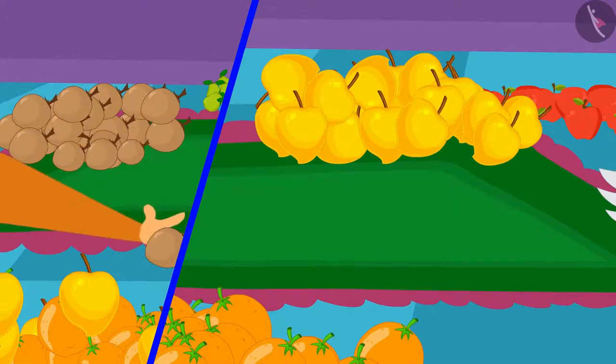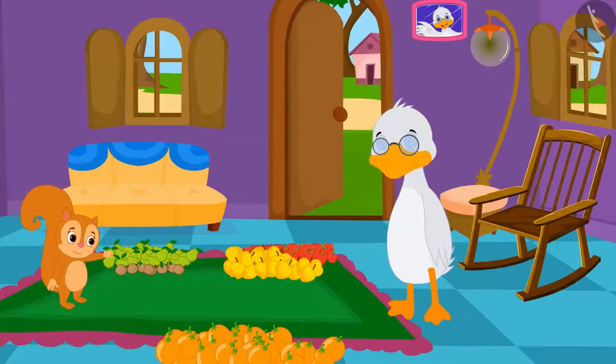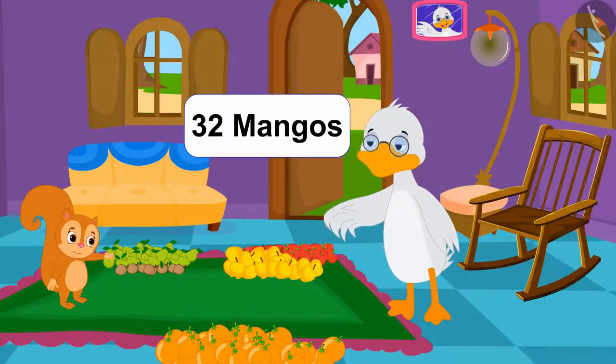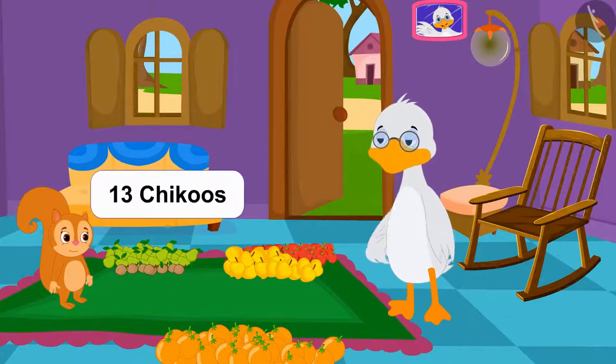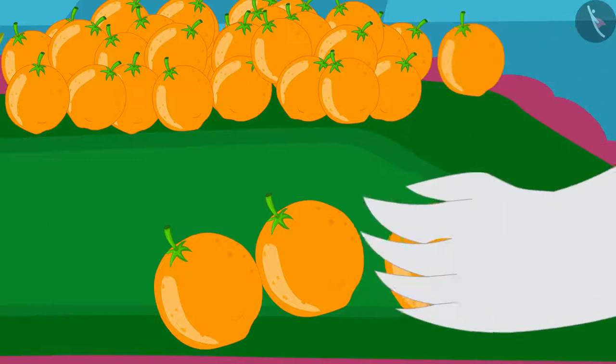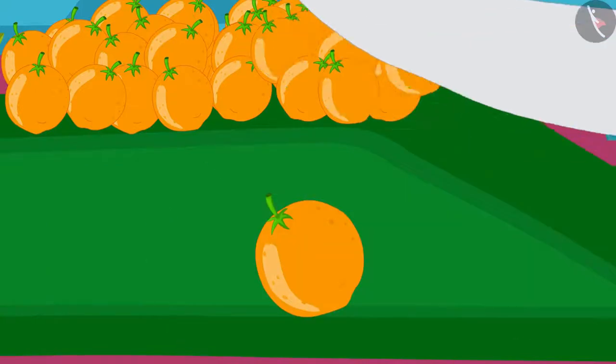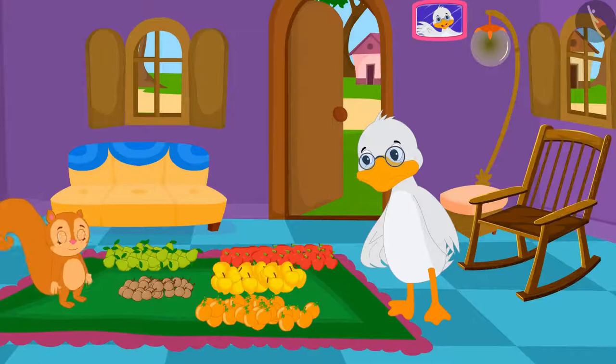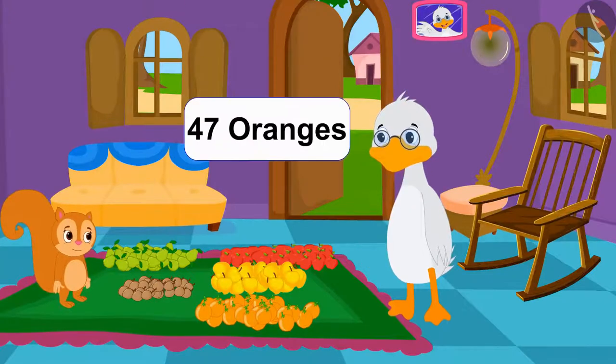Upon completion, it is found that uncle has 32 mangoes and Chanda has 13 chikkus. In the end, uncle quickly counted the oranges. Uncle has 47 oranges.